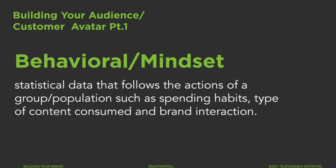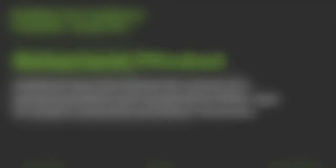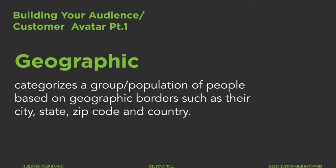Next is behavioral, which is defined as statistical data that follows the actions of a group or population, such as their spending habits, the type of content they consume, and brand interaction. Last, we have geographic, which categorizes a group or population of people based on geographic borders.